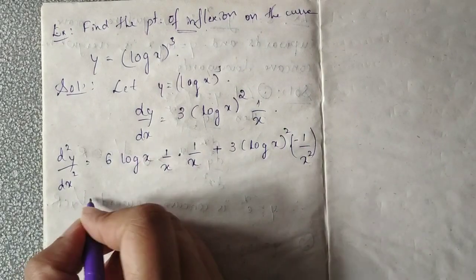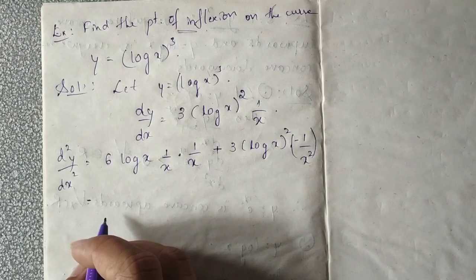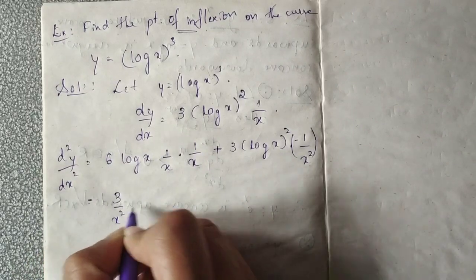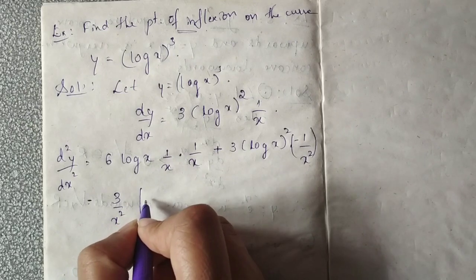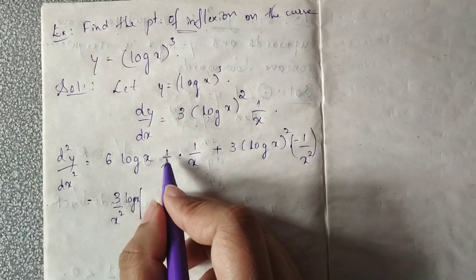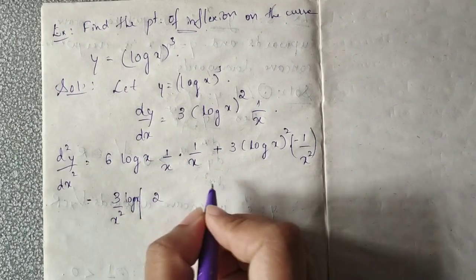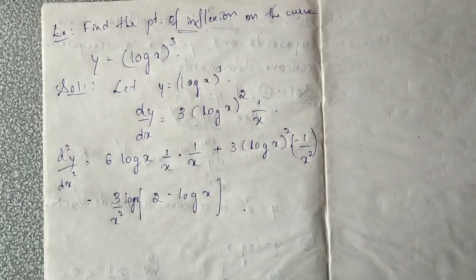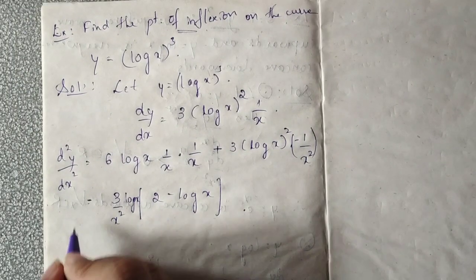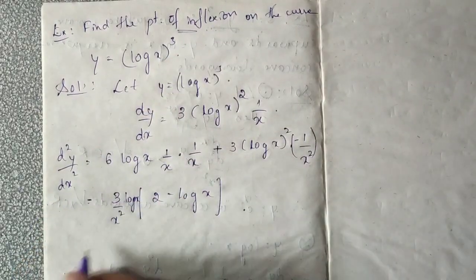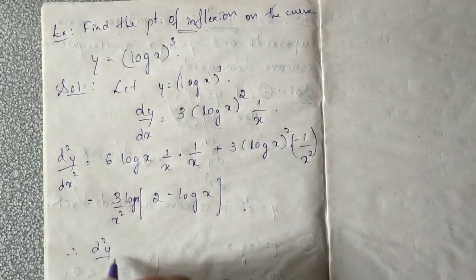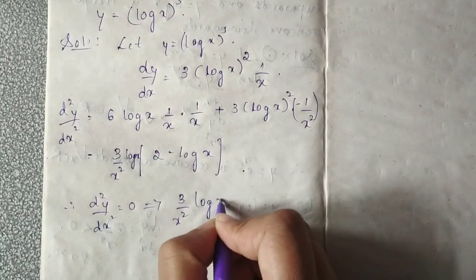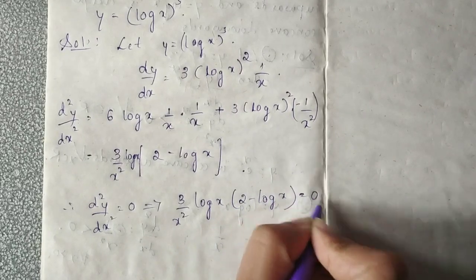Simplifying, 1 by x squared is common and 3 is common, and log x is also common. Taking 3 divided by x squared times log x outside, we are left with 2 minus log x. For points of inflection, d squared y by dx squared should be equated to 0. Therefore d squared y by dx squared equal to 0 implies 3 by x squared, times log x, times 2 minus log x equals 0.